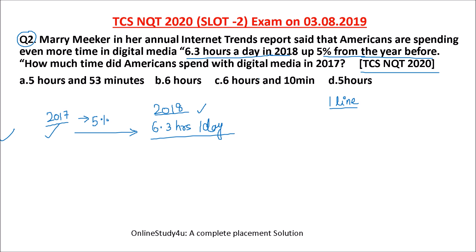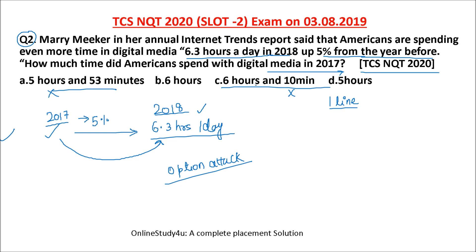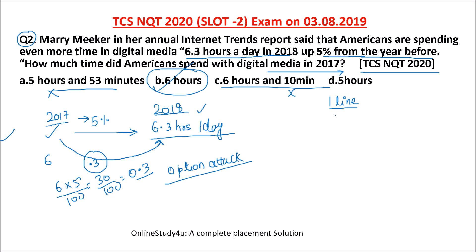Using the option attack method: let us try option B, which is 6. 5% of 6 = 0.3, so 6 + 0.3 = 6.3. Yes, that matches! Option D is 5: 5% of 5 = 0.25, so 5 + 0.25 = 5.25, which is wrong. So option B (6 hours) is the correct answer. No pen and paper needed for this question — just see the question, take the answer, and move on.